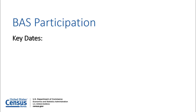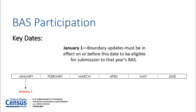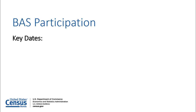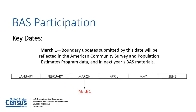BAS participants should take note of these key dates within the program schedule. Boundary updates must be legally in effect on or before January 1st to be reported in the current survey year. March 1st is the first BAS deadline. Boundary updates submitted by this date will be included in the American Community Survey, Population Estimates Program, and the following year's BAS materials.